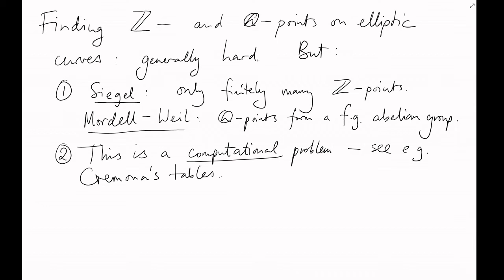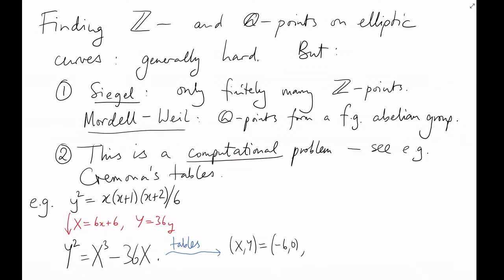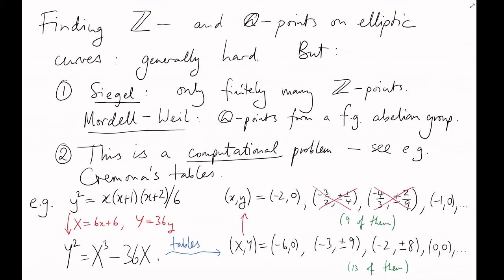For example, let's take the elliptic curve we just had. After a quick change of coordinates, we can put it in the standard form, look up this elliptic curve in Cremona's tables, and we find a list of 13 integer points in the new coordinates, of which only 9 give integer points in the old coordinates. So there's our 9 solutions. Have a look at the tables in the video description.